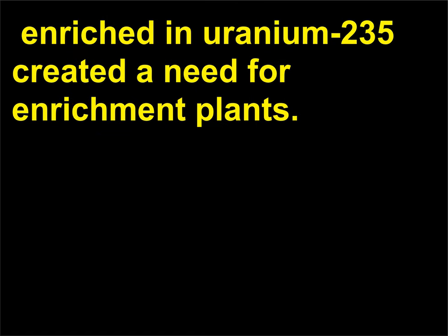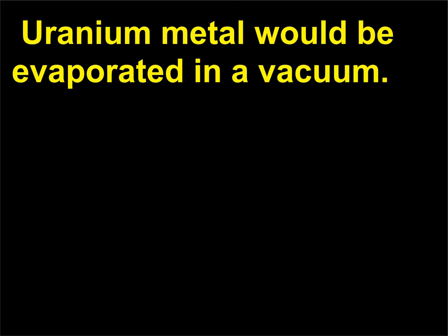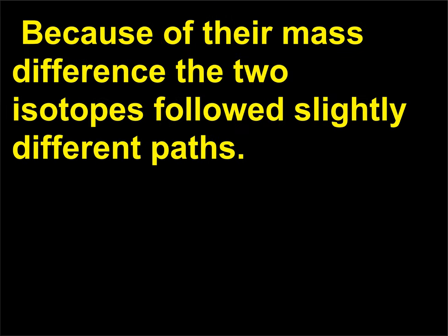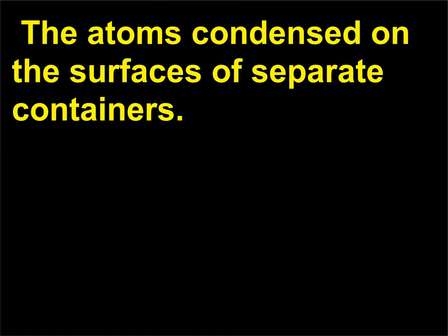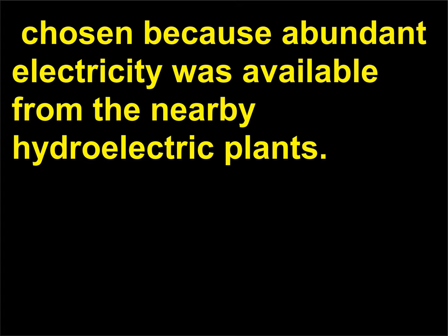The United States then established a new office that could authorize large-scale engineering projects. Enriching uranium-235 created a need for enrichment plants. One method chosen had been developed in California: uranium metal would be evaporated in a vacuum, the atoms went through a narrow slit into a region with a strong magnetic field, and because of their mass difference the two isotopes followed slightly different paths, with the atoms condensing on the surfaces of separate containers. Dozens of giant machines called calutrons were built in a plant in Oak Ridge, Tennessee.